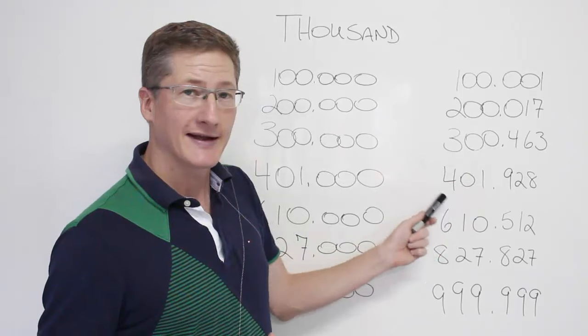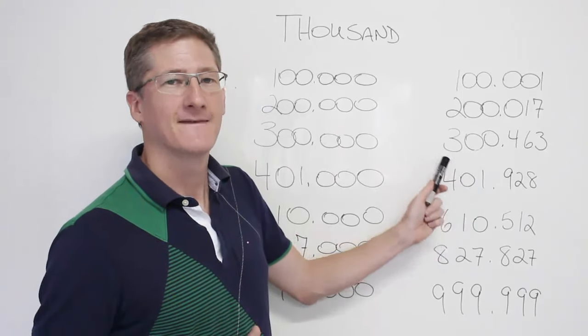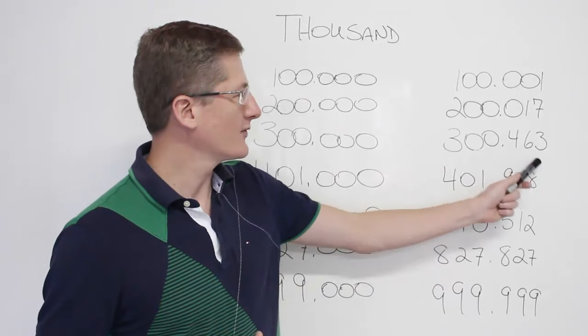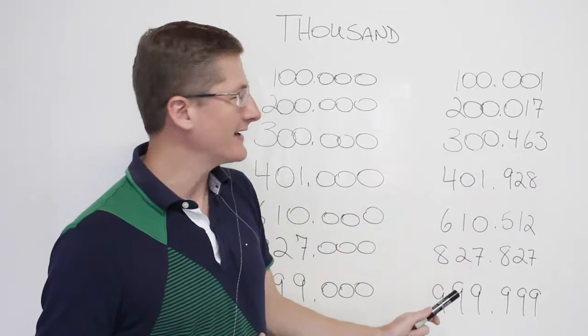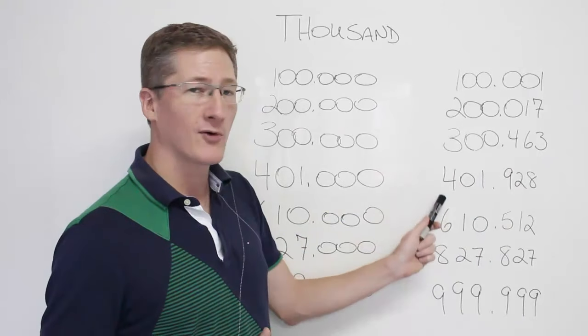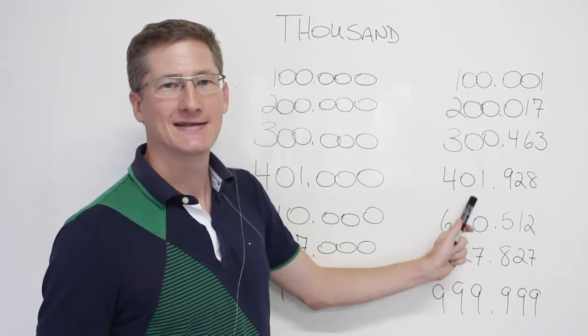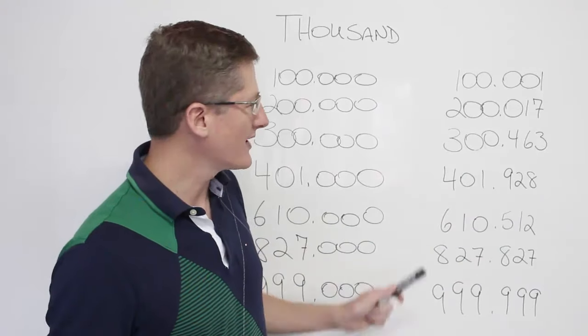Good. Here we have 401. Here we have 928. Add the thousand. 401,928. Simple, right?